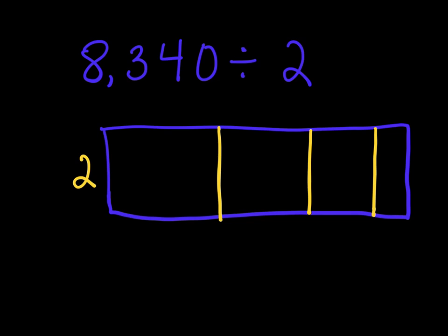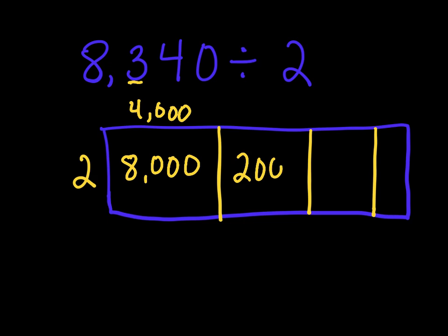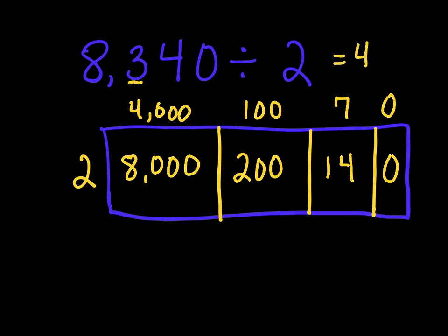This one we're not using a place value chart — we're using an area model. Looking at 8,340 divided by 2: 2 goes into 8,000 four times, giving 4,000. Our next portion is 300. 2 can't go into 300, but it can go into 200 — 2 times 100 gives 200. Subtract 200 from 340, leaving 140. 2 goes into 14 seven times, with 0 ones. Adding those up, we get a quotient of 4,170.